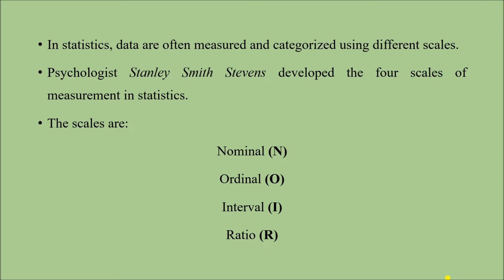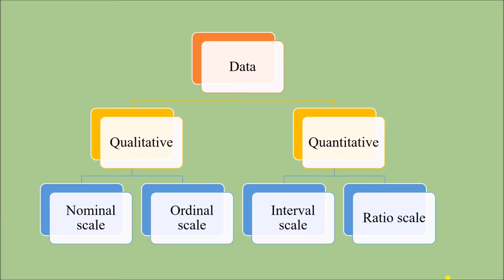To remember these four scales, we can use the mnemonic NOIR. If you remember, in our last video we discussed the classification of data. When the characteristic of the variable cannot be measured but only frequency can be recorded, it is known as a qualitative variable. In a quantitative variable, we can measure frequency as well as the characteristic of the variable. Qualitative data are often measured using nominal scale and ordinal scale, whereas quantitative data are measured using interval scale and ratio scale.